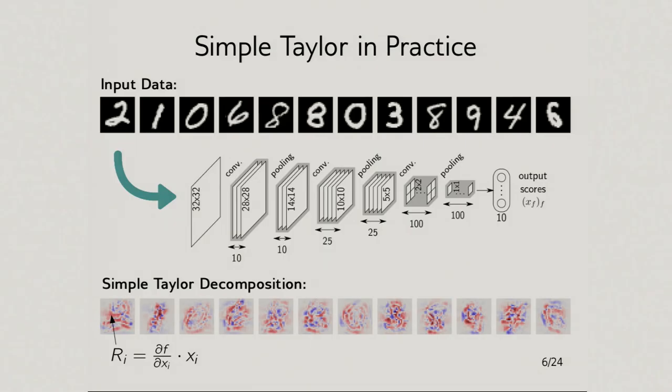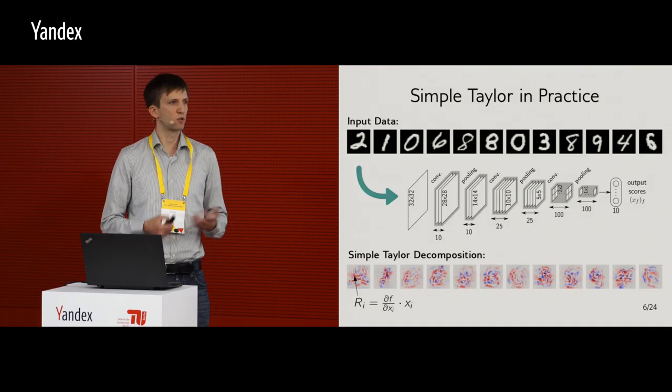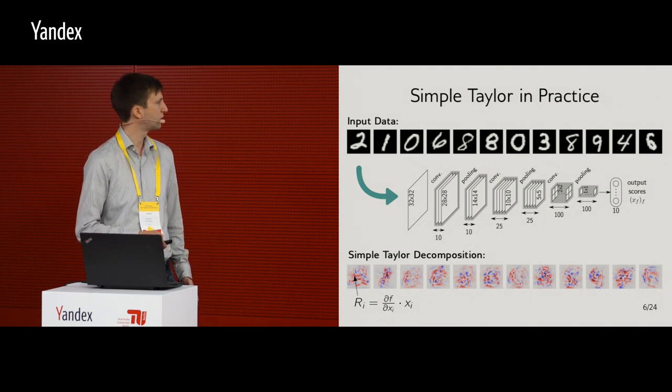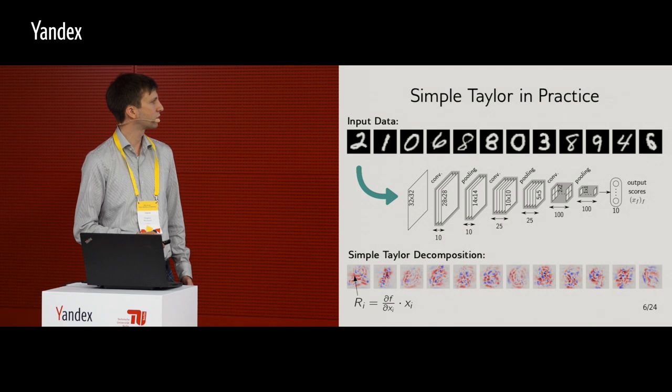So usually, if you ask the network to explain its prediction, it should have mostly positive evidence because it has found the structure. But here there is really a lot of negative evidence, and there is also a lot of noise.